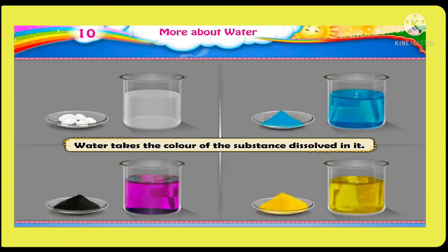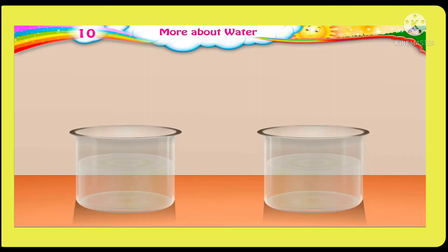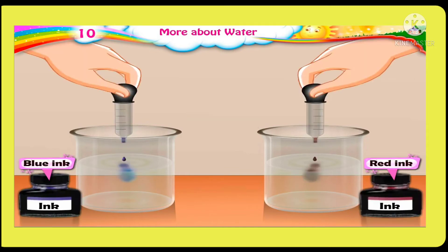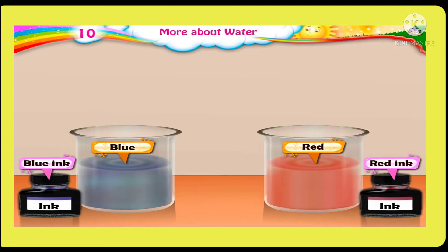Water takes the color of the substance dissolved in it. Now let's learn the characteristics of water with the help of an experiment. Take water in two beakers, add red ink in one beaker and blue ink in another beaker. You will observe that the water in which red ink is added turns red.